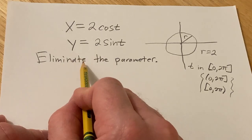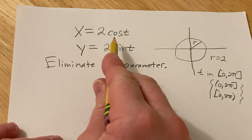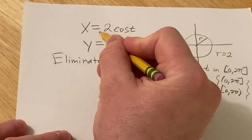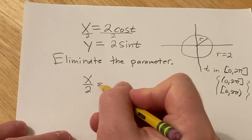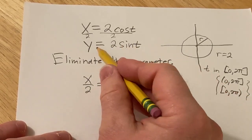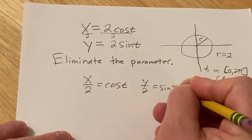Okay so to eliminate the parameter what we're going to do is we're going to take each equation and solve it for the trig function. So here we'll divide by 2, it's going to give us x over 2 equals cosine t, and then here we'll divide by 2 so it'll give us y over 2 equals sine t.